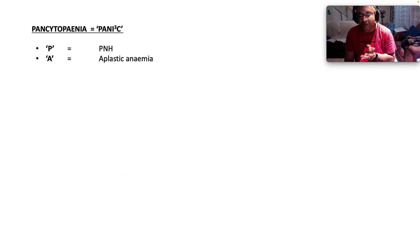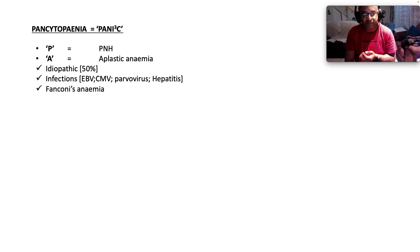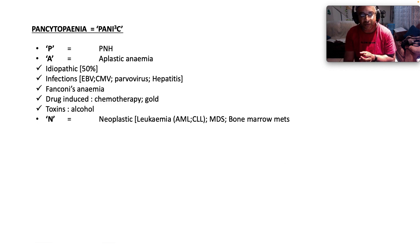Another way to look at it is using the mnemonic PANIC for pancytopenia, and the I has three elements to it. P stands for paroxysmal nocturnal hemoglobinuria, as we discussed. A stands for aplastic anemia, which is usually idiopathic 50% of the time, or it could be due to infections — especially Epstein-Barr virus, cytomegalovirus, parvovirus, and hepatitis. Fanconi's anemia can cause aplastic anemia. Drug-induced issues like chemotherapy and gold, and toxins like alcohol.